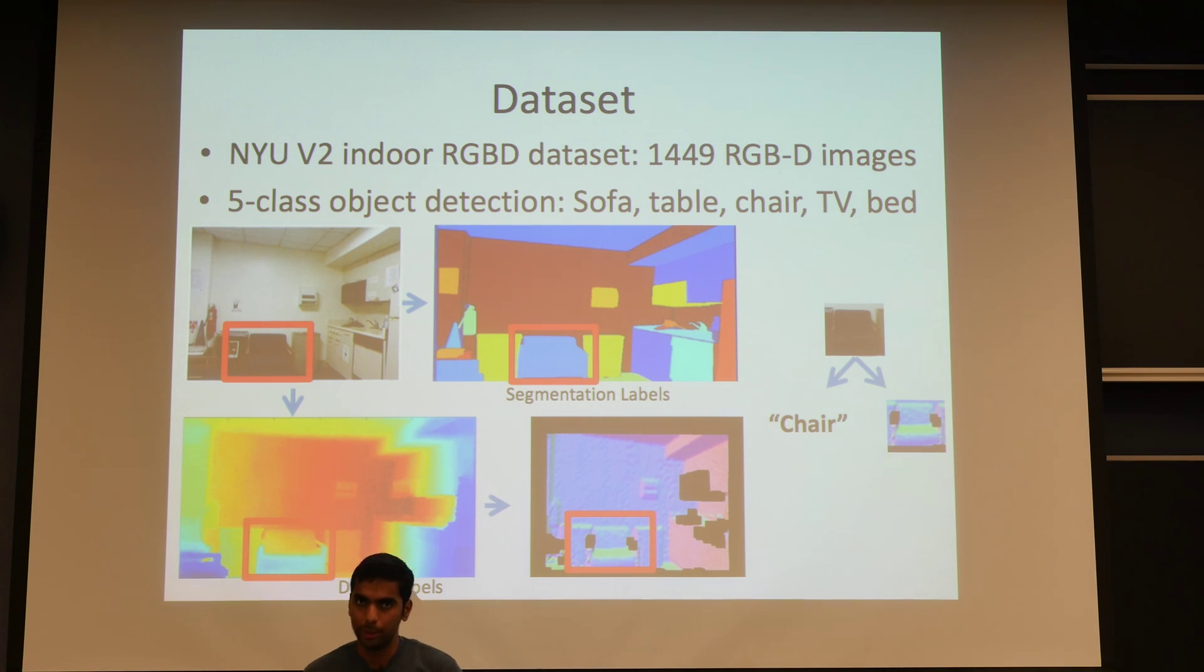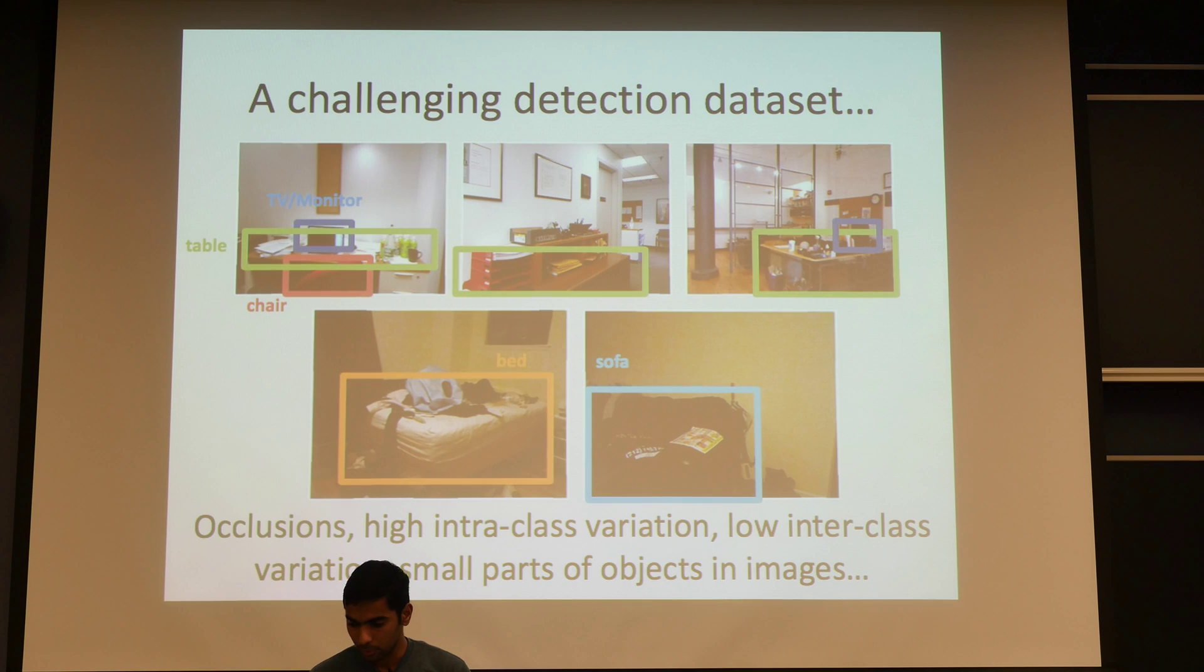We use NYU v2 RGBD dataset which has 1500 total images and we considered the five major classes in that dataset for our detection problem. The dataset comes with semantic labels which we use to generate the bounding boxes, and it also comes with depth labels which we use to convert into surface normals and hence get a 3D representation for the objects. These are some of the images from our dataset, and as you can see, it's a pretty challenging dataset with lots of occlusions. Lots of images have just parts of objects and so on.